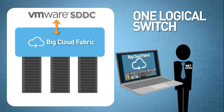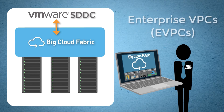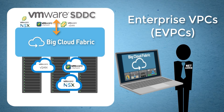Big Cloud Fabric Enterprise Cloud leverages cloud networking principles which use constructs of virtual private cloud like Amazon VPC for logical isolation across multiple tenants. Similarly, the Big Cloud Fabric controller creates Enterprise VPCs or eVPCs in the fabric for each of your VMware deployments, allowing logical isolation and multi-tenancy. If communication is desired between the eVPCs, then eVPC peering can be established.